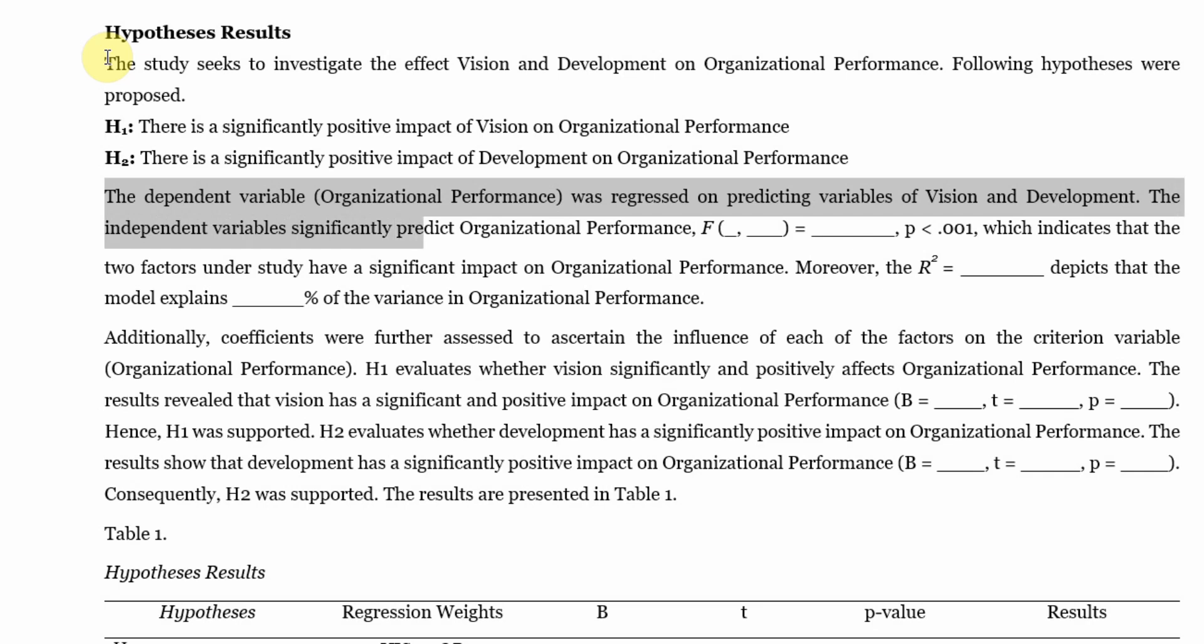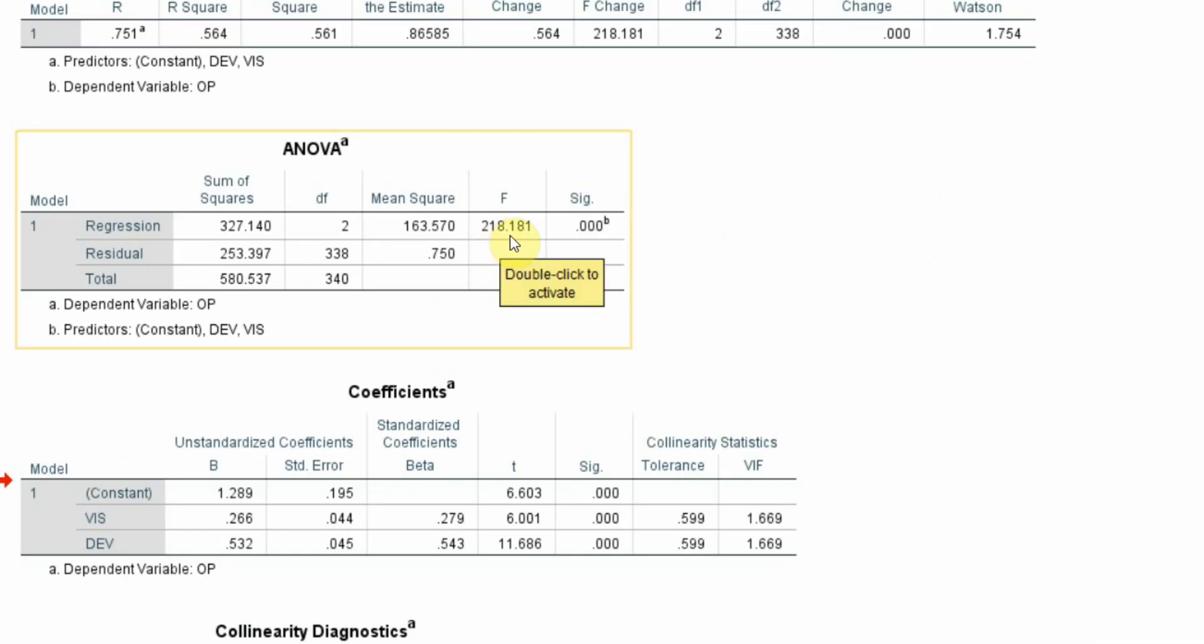The independent variables significantly predict organizational performance. Where is my F statistic? 218.181 and this is regression residual 2, 338.